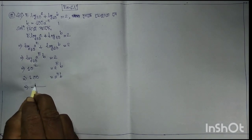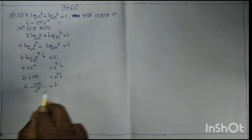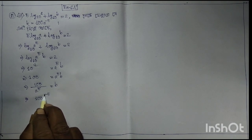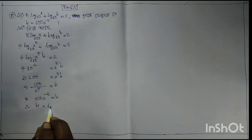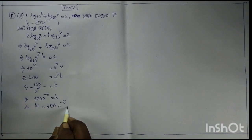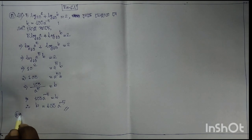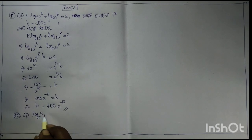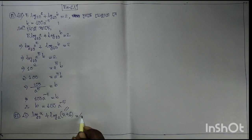Therefore 100 = a⁵ · b, which implies b = 100 / a⁵, implies b = 100 · a^(−5), therefore b = 100 · a^(−5). Moving to equation 12, question 1: log₂(x) + log₂(x + 6) = 4.